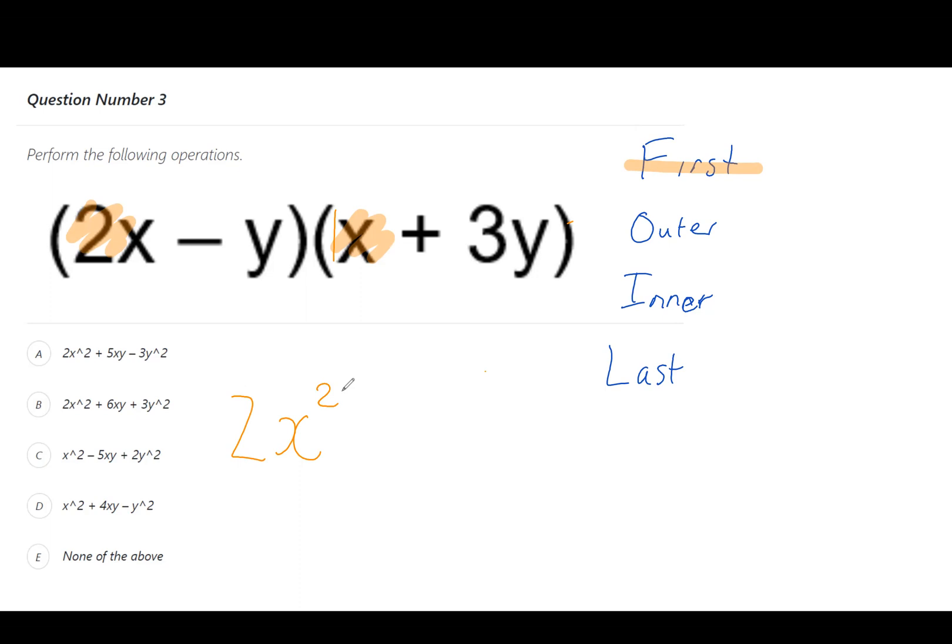Our next one is the outer ones. The outer ones means, if you think of it like a sandwich, the ones on the edges. That's the 2x with plus 3y. So 2 times 3 is positive 6, and with the letters we have a convention of writing them in alphabetical order, so 6xy.